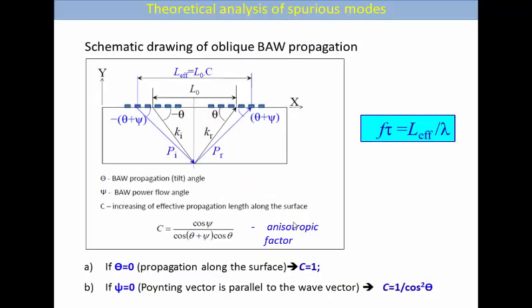Now let's proceed to analysis of obliquely propagating modes. This is a schematic drawing of oblique BAW propagation. The wave is reflected from the bottom and detected by the output IDT. The length covered by this incident and reflected wave along the surface depends on coefficient C, which is an anisotropic factor and which depends on two angles: the BAW propagation angle and also the angle between the vectors k and P, which in general are not parallel to each other. A simple case is when the wave propagates along the surface, C is unity. If Poynting vector is parallel to the wave vector, then C is reverse squared cosine function.